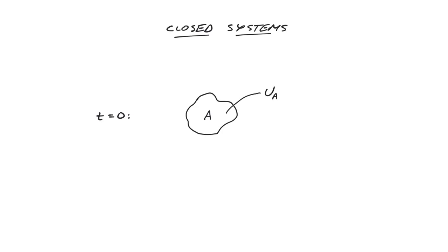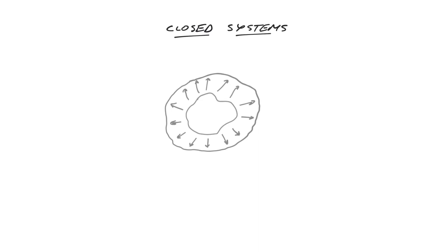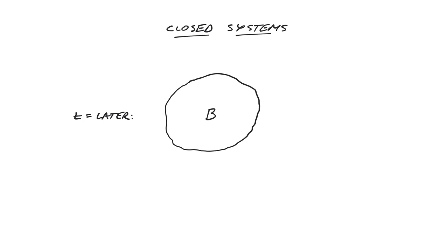However, by adding or removing heat, or doing work on the system boundary, we can transform the system over time into some new equilibrium state B, with internal energy UB. The question the first law seeks to address is how much the internal energy of the system will change as a result of this transformation from A to B.